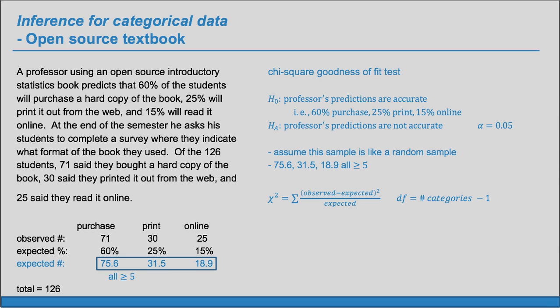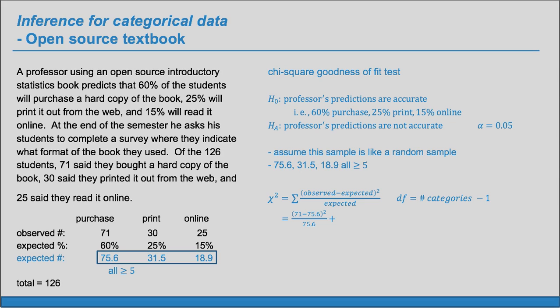And now our chi-square statistic is going to be the sum of the observed minus expected squared over expected. So we can start calculating this. Here's our first observed number is 71, subtracted by its corresponding expected. Square that, and then divide by the expected. And then do that for the other two terms as well. Our degrees of freedom is number of categories minus one. So we have three categories. So that's going to be two degrees of freedom here.